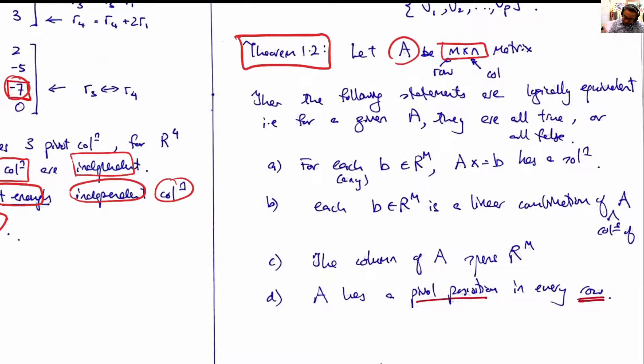Here is the claim: if the columns of A span R^m, then it also means that A has a pivot position in every row.